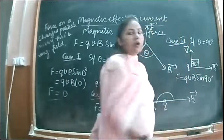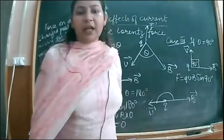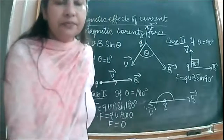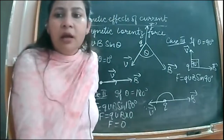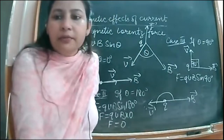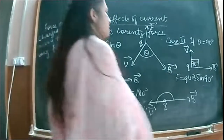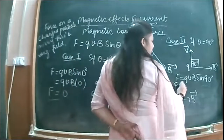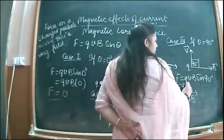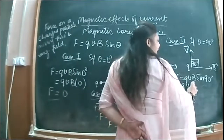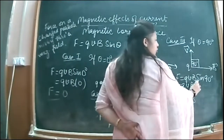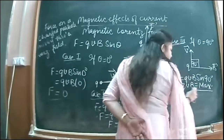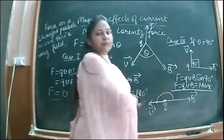What is sin 90°? Sin 90° is 1. So putting it as 1, you get F = qvB, which is the maximum possible value. This means maximum force acts on the charged particle when it moves at 90 degrees to the magnetic field.